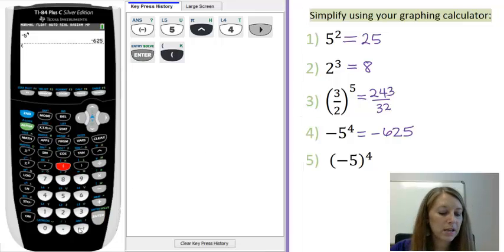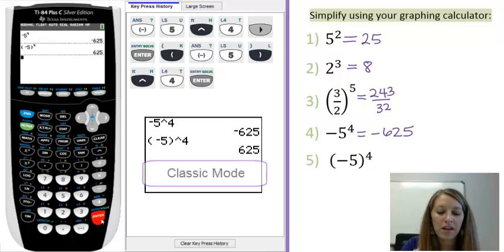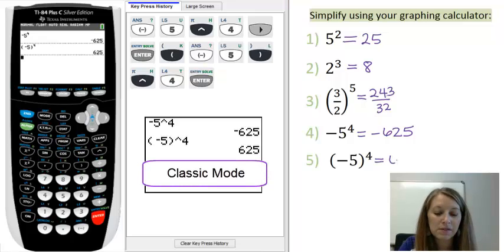Open parenthesis, negative 5, close parenthesis to the fourth power. And we can see when we simplify this, that gives us positive 625.